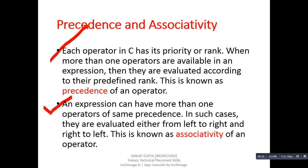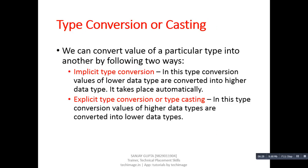Next topic is type conversion or type casting. We can convert the value of a particular type into another by following two ways. The first way is implicit type conversion, where values of lower data types are converted into higher data types — it takes place automatically. The second is explicit type conversion or type casting, where values of higher data types are converted into lower data types. So, this is all about operators. Thank you.